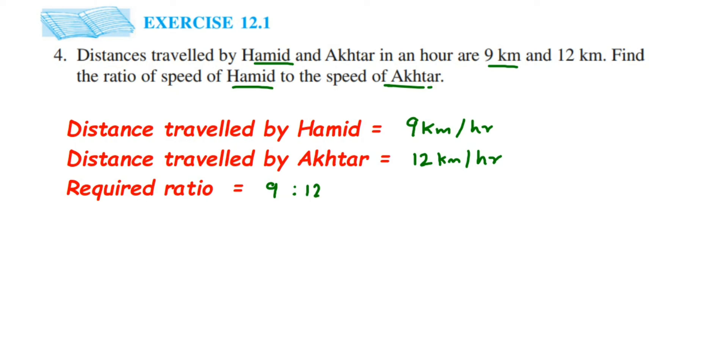Because we don't write units when writing ratios, right? So it will become 9 is to 12, but this is not in reduced form. So I'm going to convert this into a fraction: 9 by 12. Cancel this in 3's table: 3 threes are 9, 3 fours are 12, so we get 3 by 4.